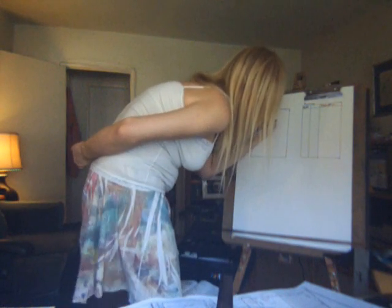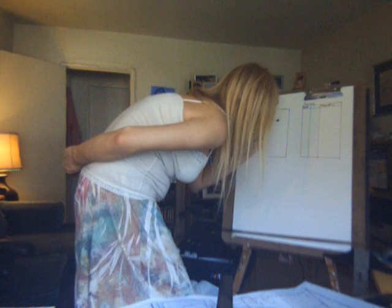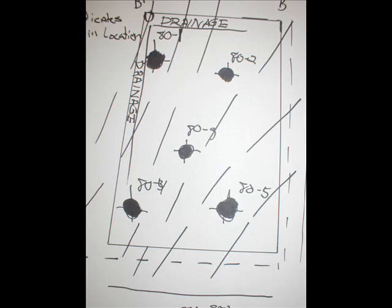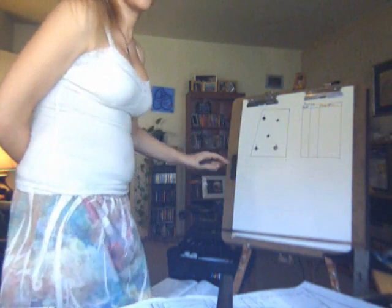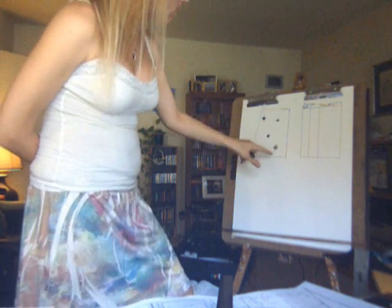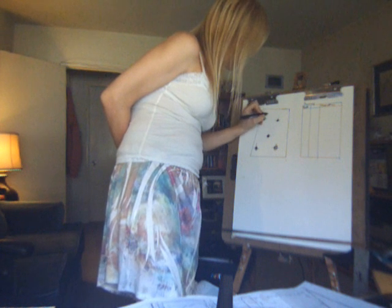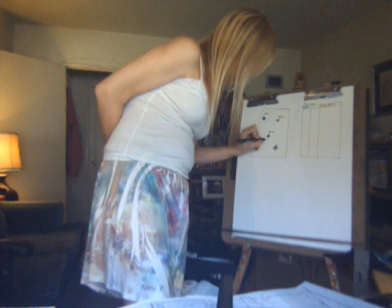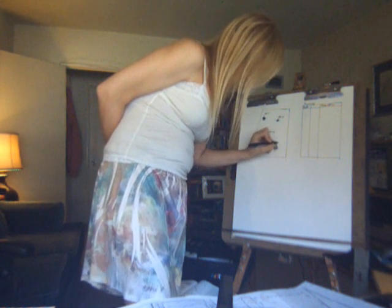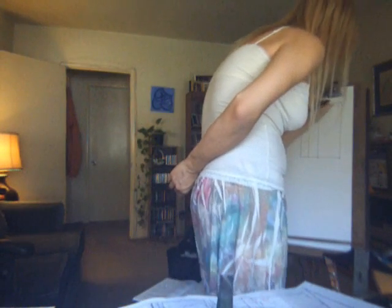With each one of the borings we're going to examine throughout the property, we'll go ahead and label them with whatever boring number we've decided on. We can label them B0-1, B0-2, and so on. We can expand on this boring log — this one here, B0-1.